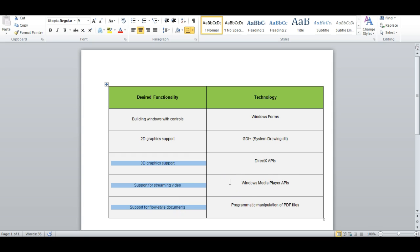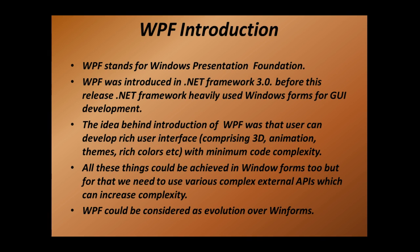The solution to such a problem is WPF. This is the prime reason why Microsoft introduced WPF — it is essentially an evolved version of Windows Forms. The idea behind WPF was that users can develop rich user interfaces with minimum code complexity. All those things could be achieved in Windows Forms too, but you'd need all those APIs added, which increases complexity. So WPF can be considered an evolution over Windows Forms.